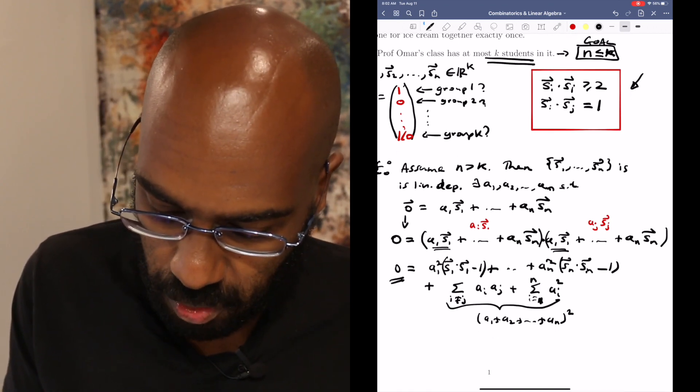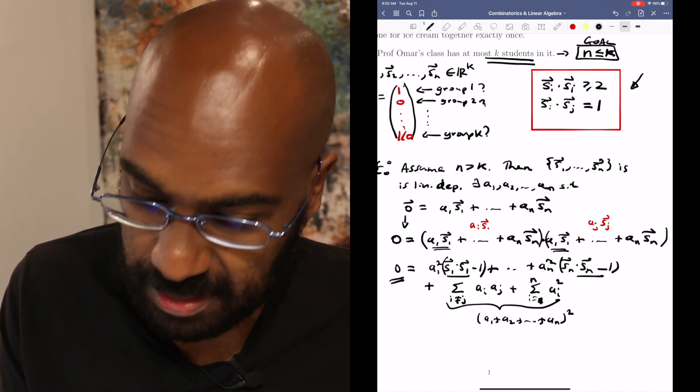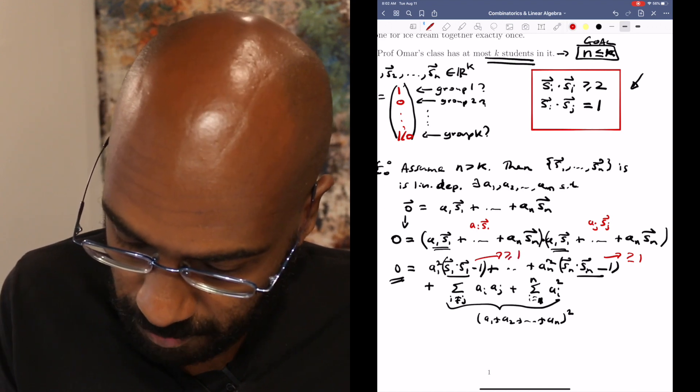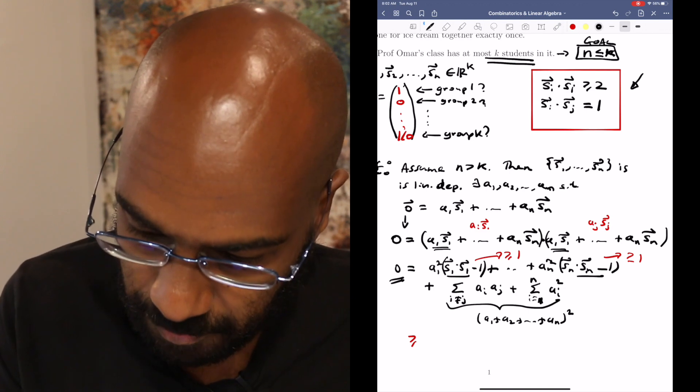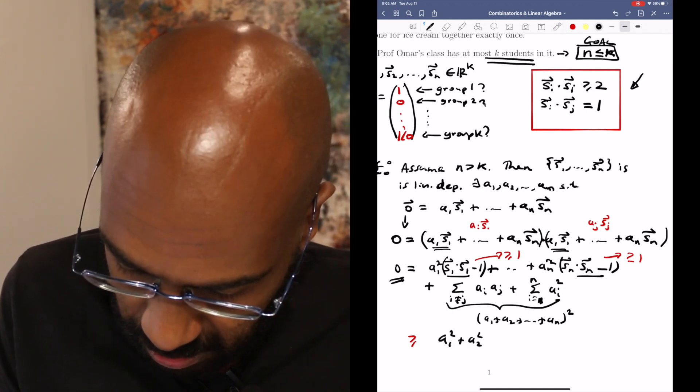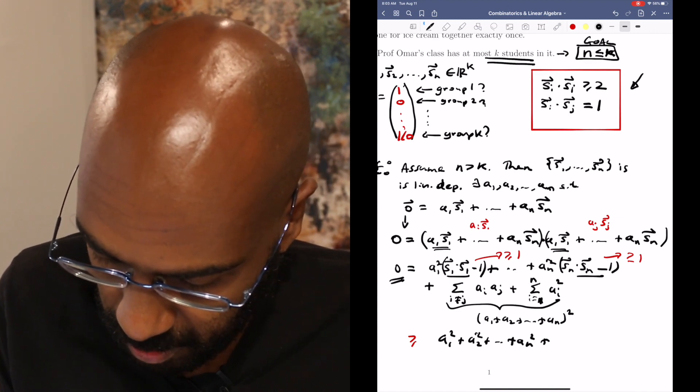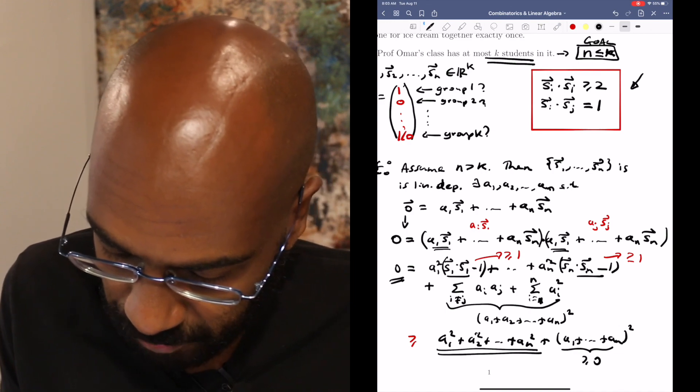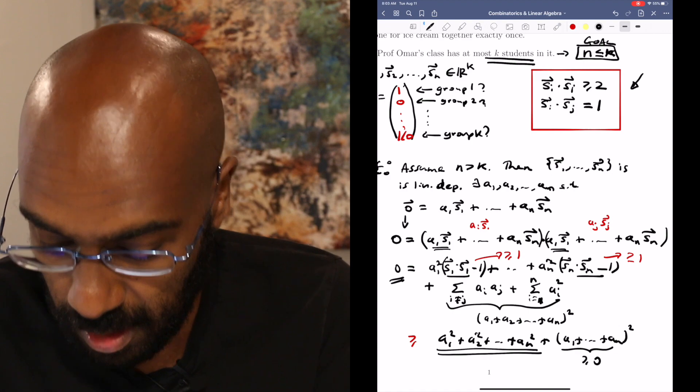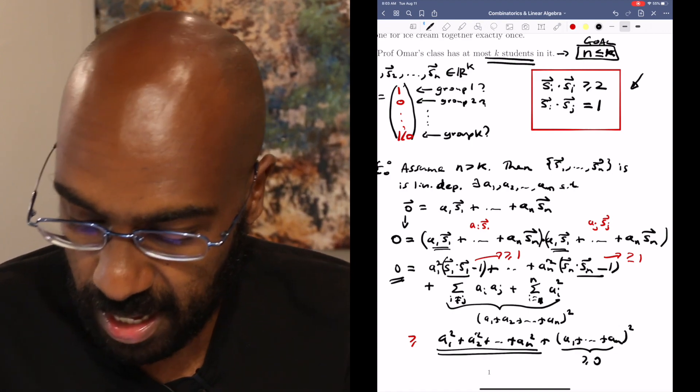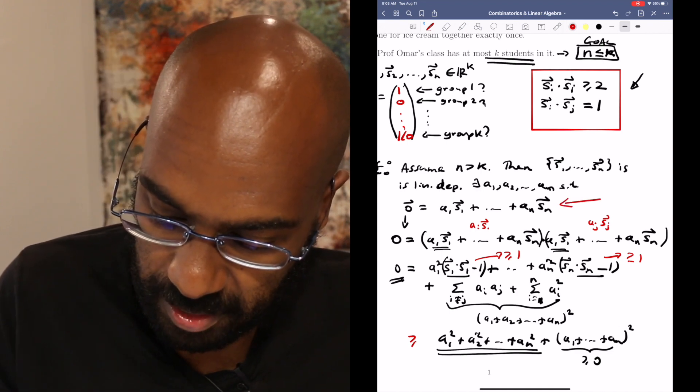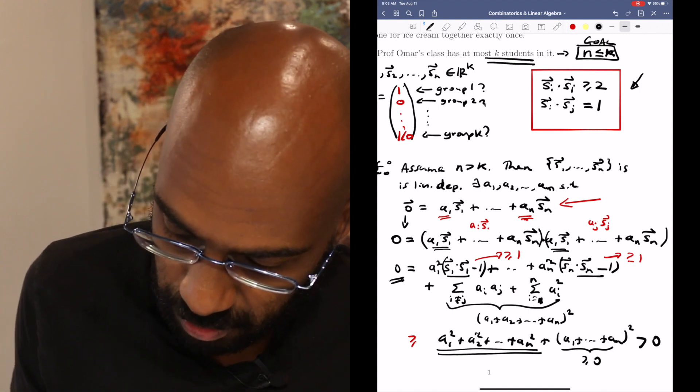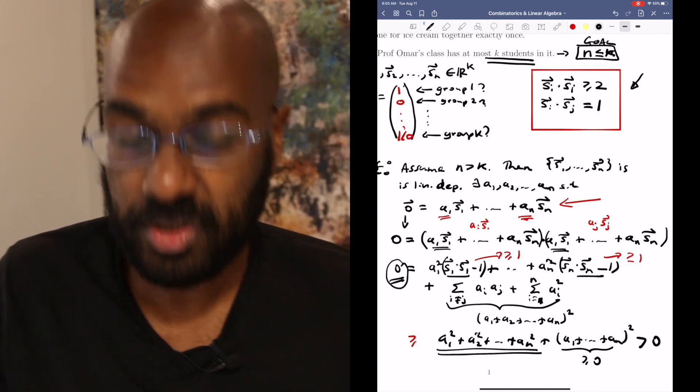Okay, so what we have here then is that 0 is some number. These values here, because the s i dot s i's are at least 1, these things are all at least 1. And so this entire expression is at least the sum of the squares of these a i coefficients plus the sum of the coefficients all squared. Now this quantity here is not negative, but this quantity here, the only possible way that it would actually be 0 is if all of the a i s are 0, but all the a i s can't be 0 because we claimed linear dependence. So some of these coefficients here have to be non-zero. So this quantity here is actually strictly greater than 0, but we said all along that is bounded above by 0, and so we have our contradiction.